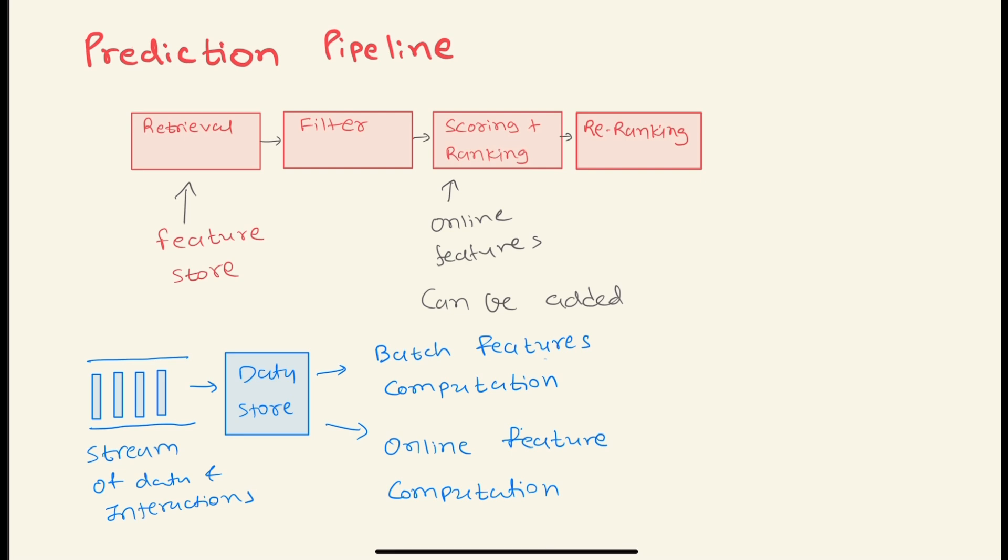For the data pipeline, we may be continuously getting streams of data, which might be interaction data and so on. We do batch processing for some features and then we do online feature calculation as well. You have to discuss here what kind of features we should do batch processing for, and what kind of features we can use in online processing.